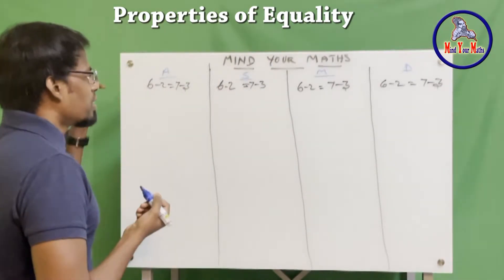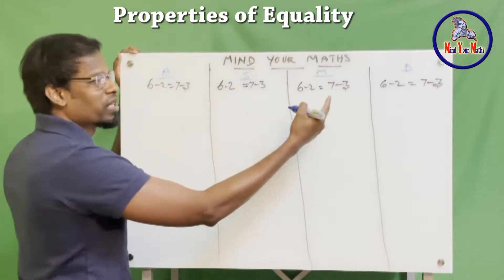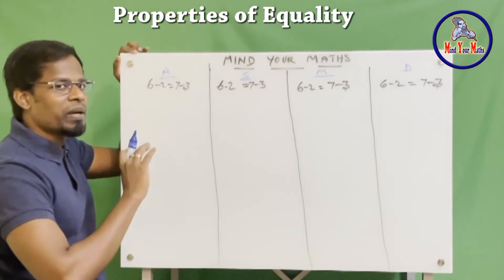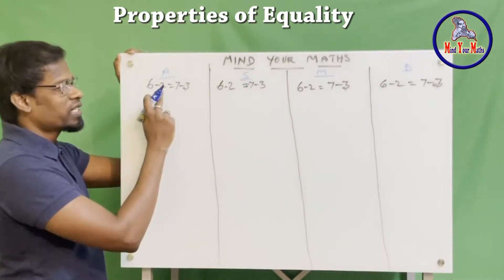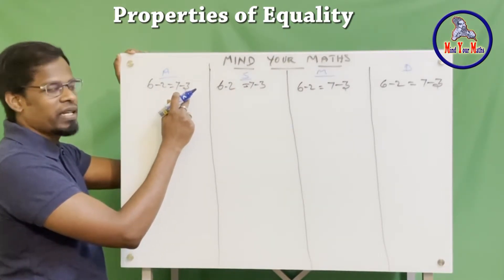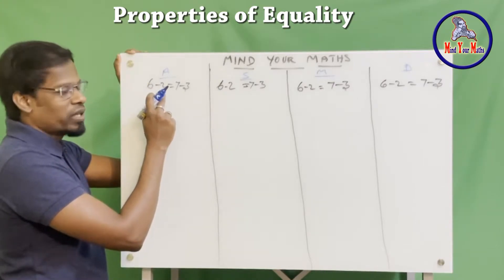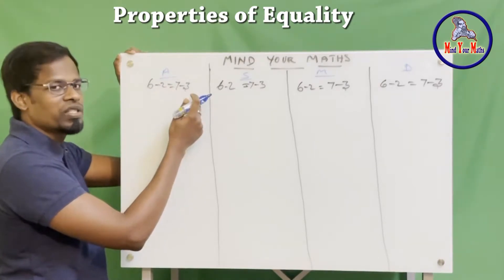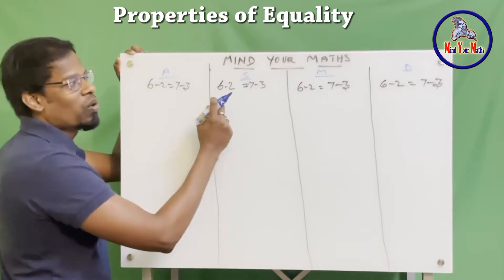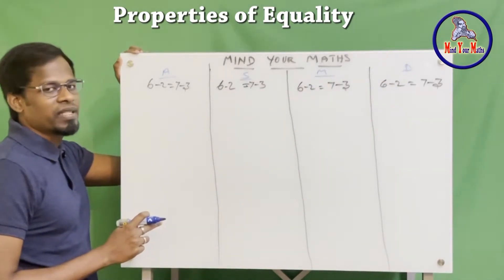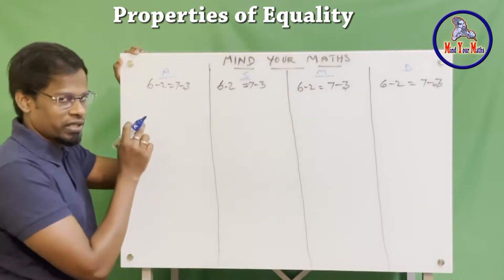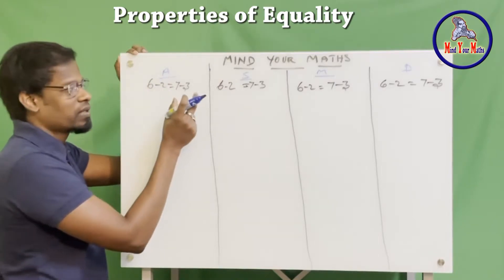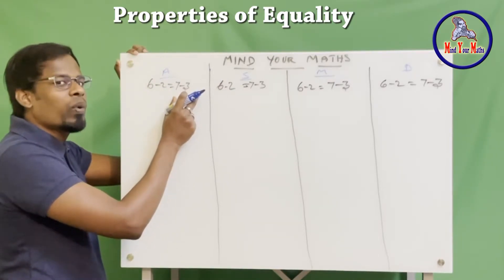Now let's see this equation. I have used the same equation with simple numbers for all four operations so that it is easy for you to compare. So now let's see: 6 minus 2 equals 7 minus 3 — this one is 4, 6 minus 2 is 4 and 7 minus 3 is also 4. So 4 equals 4. I have used the same equation in all the tables. Now let's add a particular value on the left-hand side as well as on the right-hand side and see if the equality is maintained.